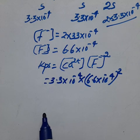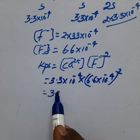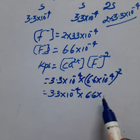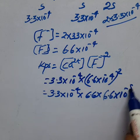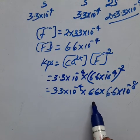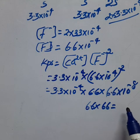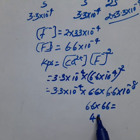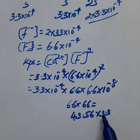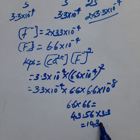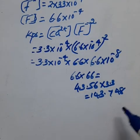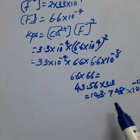Ksp equals [Ca²⁺][F⁻]². Substituting: 3.3 into 10 raised to minus 4, multiplied by (6.6 into 10 raised to minus 4) squared, gives 10 raised to minus 12.